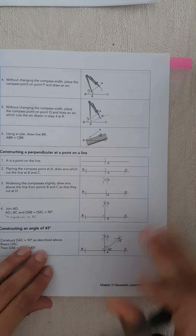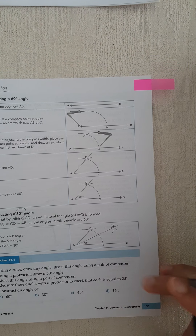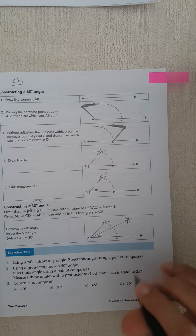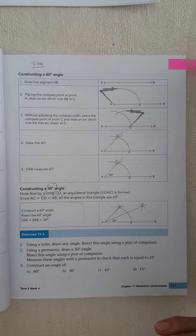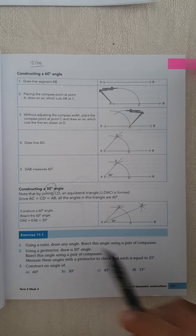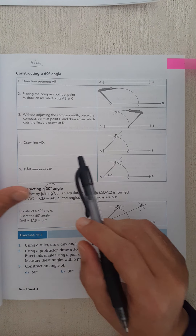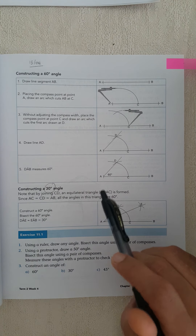Then we're moving on to one more thing. For today, if you go to your textbook, we're doing constructing a 60 degree angle and a 30 degree angle. We're on page 131, and now we're going to go through these. Those of you who are having trouble, I will help you out. So constructing a 60 degree angle.